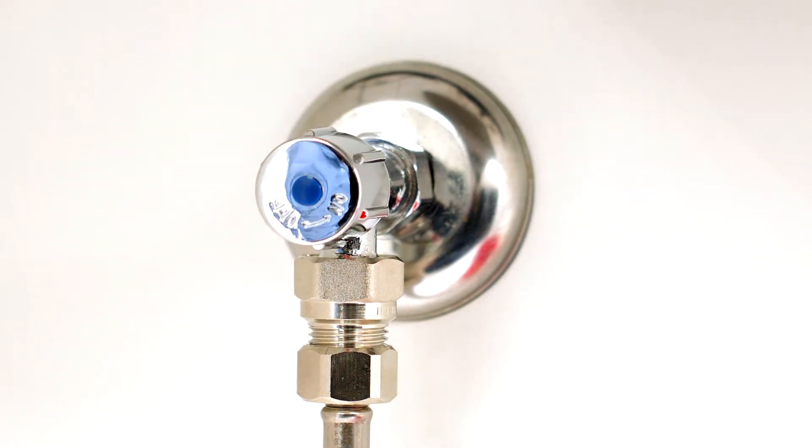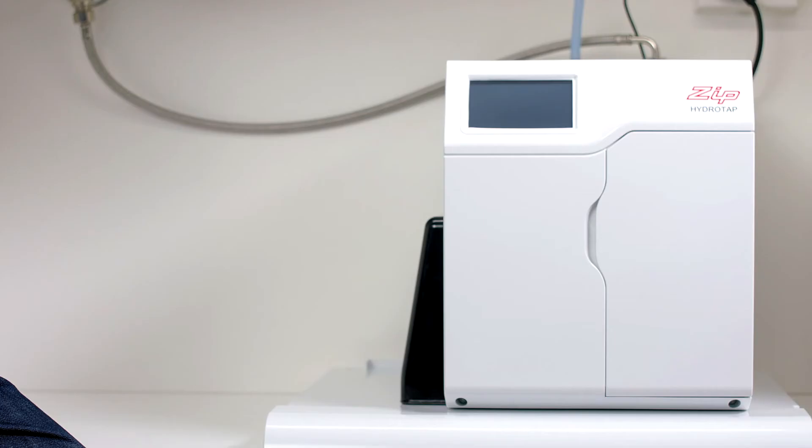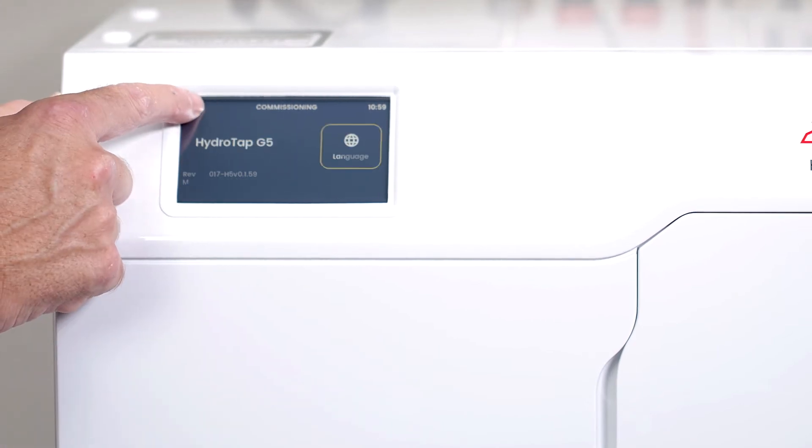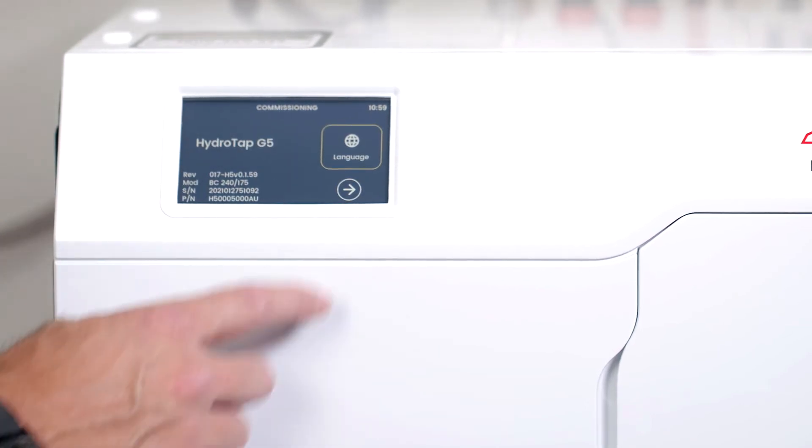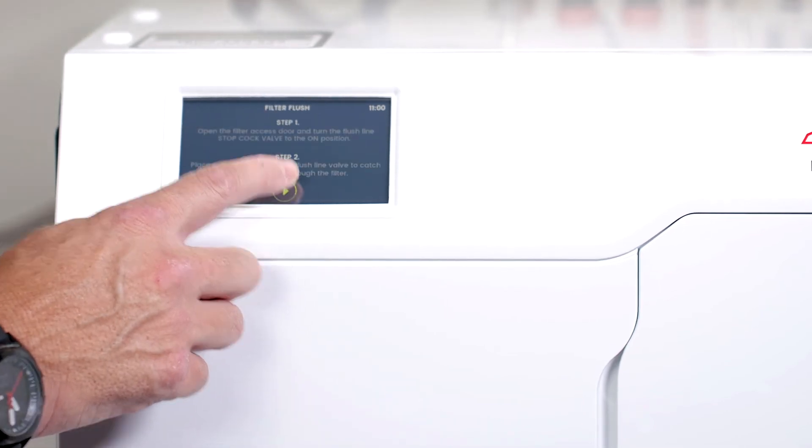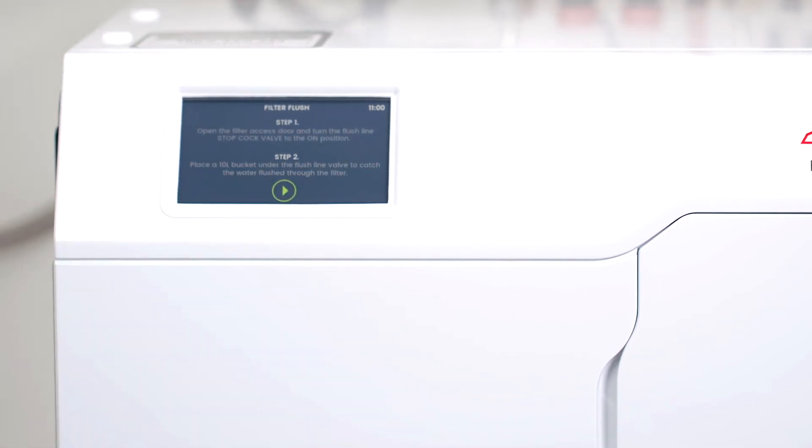Turn on the water supply and then the power point. The first screen shows the model number and serial number of the hydra tap. It also gives you the option to change the language used on the LCD. The default language is English. Press the arrow button to go to the next screen. The next screen explains the reason for commissioning the hydra tap. Press the arrow button to go to the next screen.